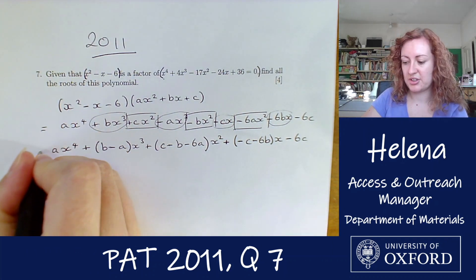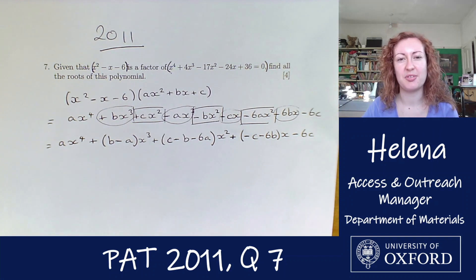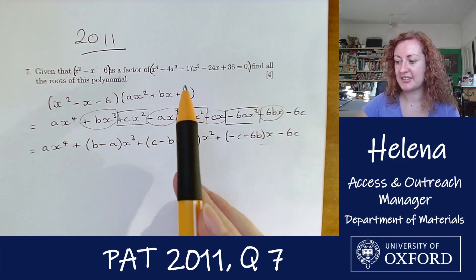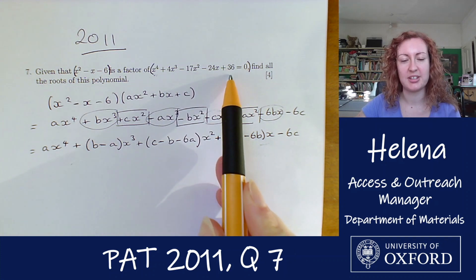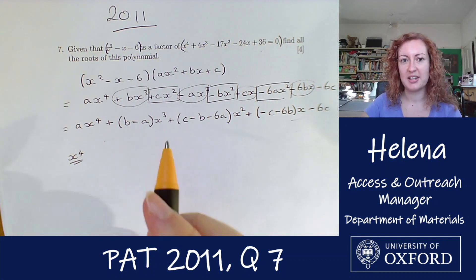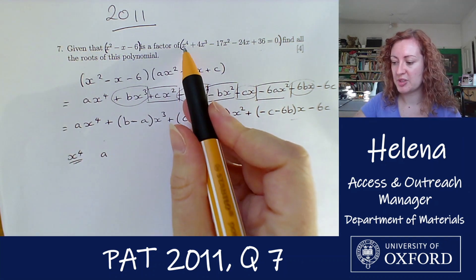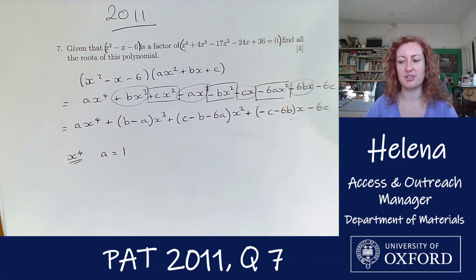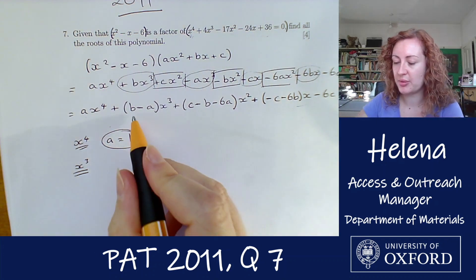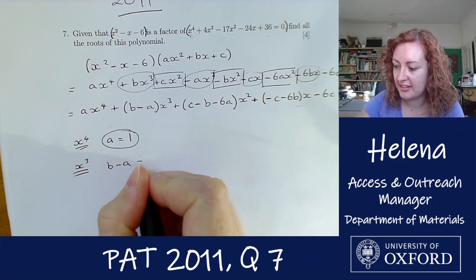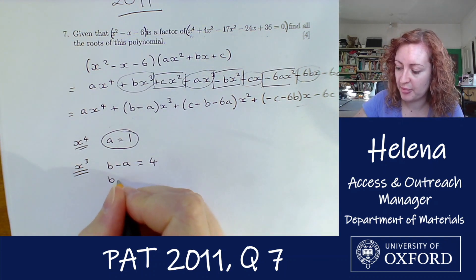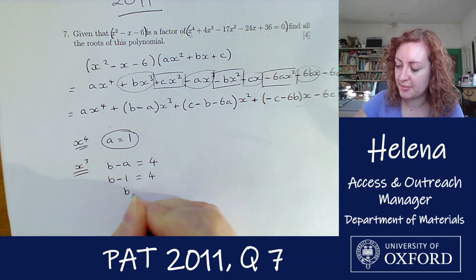This expanded polynomial must equal the one given in the question, so we can compare coefficients. For x to the four: a equals 1. For x cubed: b minus a equals 4, and since a equals 1, we get b minus 1 equals 4, so b equals 5.